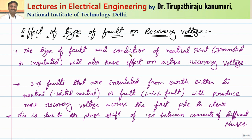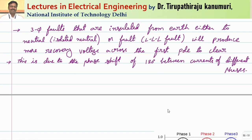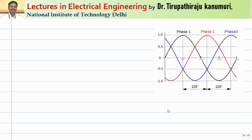The type of the fault and the condition of the neutral point — whether the neutral is grounded or insulated, or whether the fault is a grounded or ungrounded fault — will have an effect on the active recovery voltage. For three-phase faults that are insulated from the earth (isolated neutral case) or a triple-L fault not associated with the ground, more recovery voltage will be produced except for the first pole to clear. This is due to the phase shift of 120 degrees between currents of different phases, and many of you questioned how this comes about, so I want to clarify it in detail.